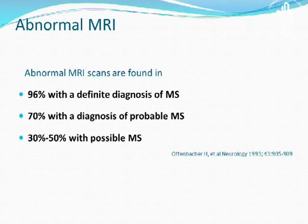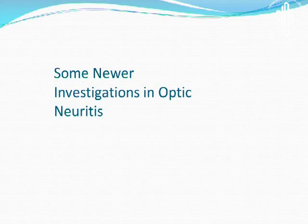Abnormal MRI scans are seen in 96% of patients with definite MS, 70% with a probable MS prognosis, and in 30-50% with possible MS.